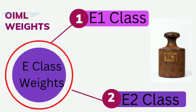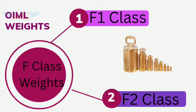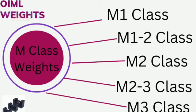E class weights are further classified into two types: E1 class and E2 class. F class weights are further classified into two types: F1 class and F2 class. M class weights are further classified into five types: M1 class, M1 of 2 class, M2 class, M2 of 3 class, and M3 class.